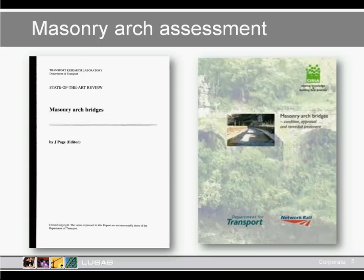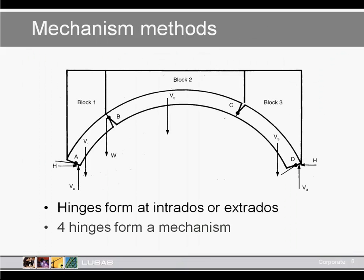The mechanism method is routinely used for many arch bridges. It is based on the observation that failure involves the formation of hinges — typically four hinges form, one on the internal face, one on the external face, and at the hinge points themselves. This is a simple equilibrium calculation leading to a value of failure balanced by the self-weight of the arch. You repeat this exercise until you find a minimum load, which is the strength of the structure.